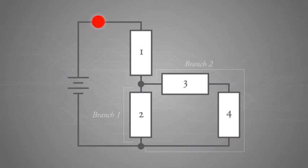There are two nodes that are the junction points between branch one and branch two. All of the circuit's total current flows through load number one, which is indicated by the large red dot labeled IT.